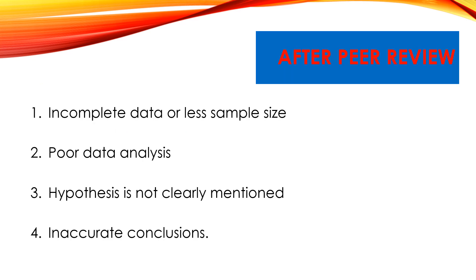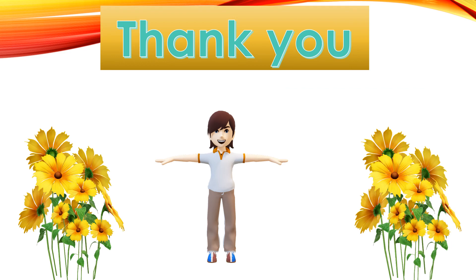After peer review, the chances also exist that your manuscript will be rejected for publication. Probable reasons include incomplete data or small sample size, very poor data analysis, hypothesis not clearly mentioned, and inaccurate conclusions. These are the reasons for which a manuscript will be rejected even after peer review. You need to consider all these points before submitting your manuscript to any journal so that the chances of rejection can be minimized to a greater extent. Take care of all the mentioned points to avoid manuscript rejection.